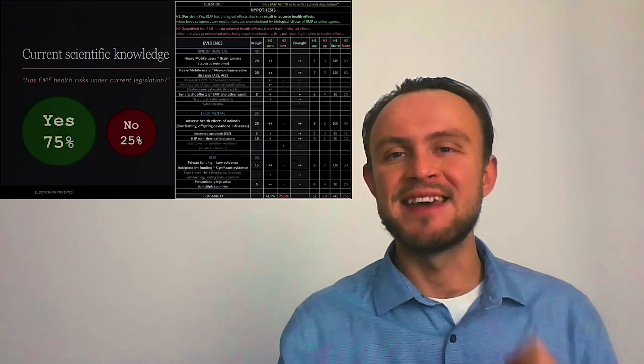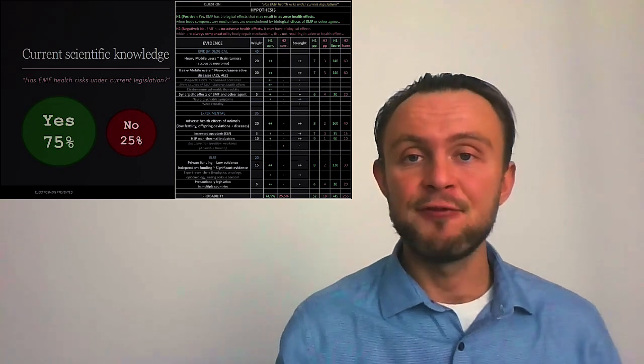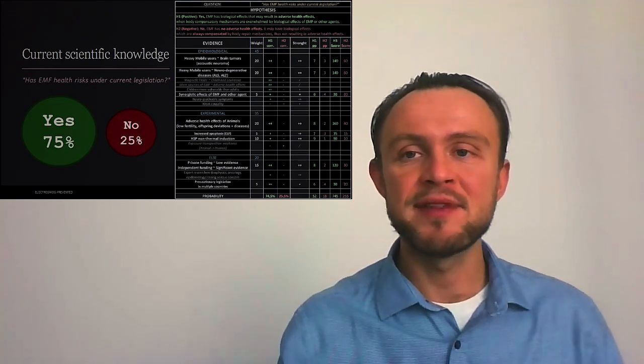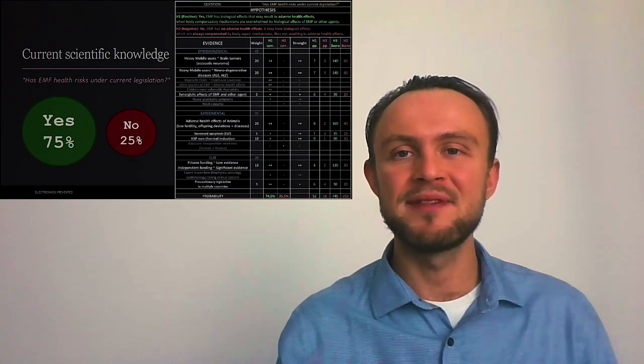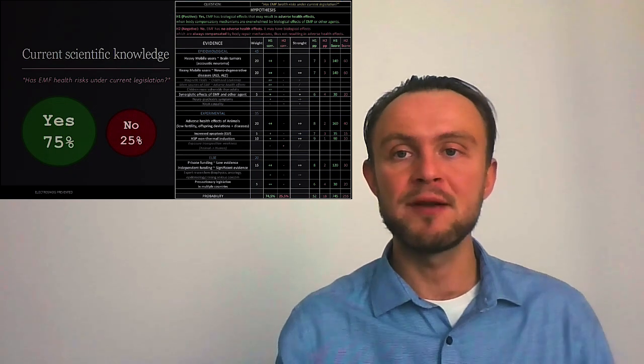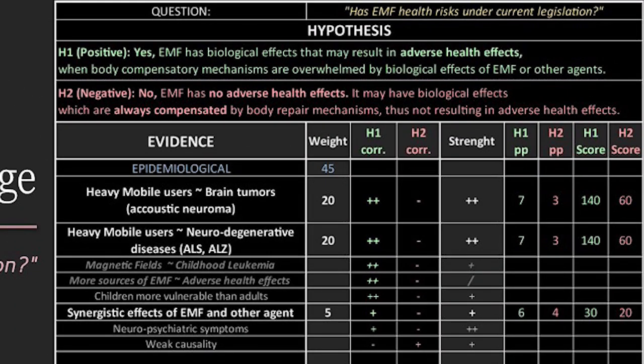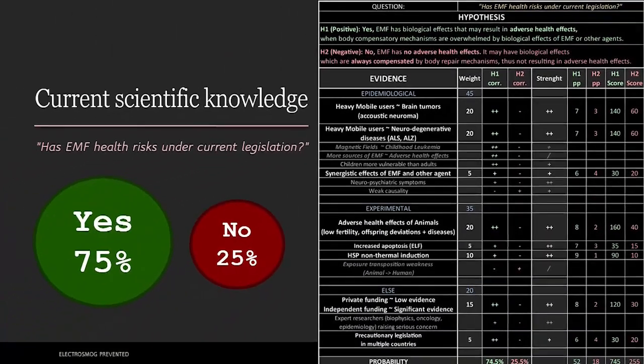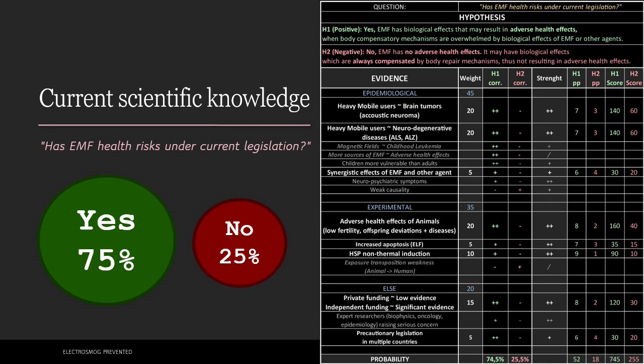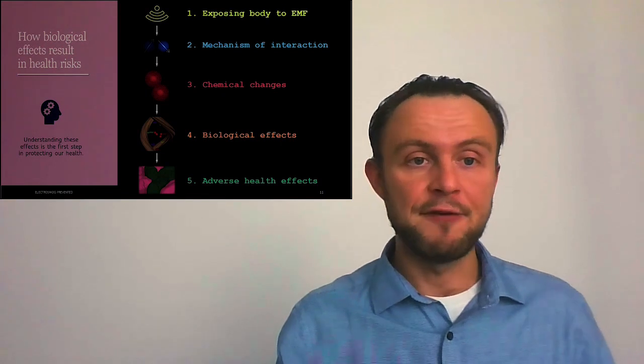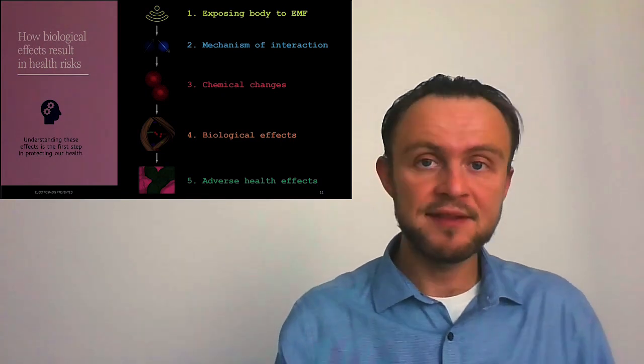Precisely, yes, electromagnetic fields can have biological effects that may result in adverse health effects when body compensatory mechanisms fail. This results from the analysis of competing hypothesis, which you can look into more detail on the link below the video. So how do biological effects result in health risks?